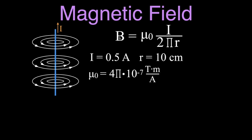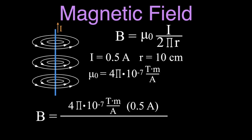Let's do a simple problem using that equation. The magnetic field strength equals μ₀ times I divided by 2πr. In this case, the current is 0.5 amperes and the radius is 10 centimeters. Our constant is 4π × 10⁻⁷. We plug the values in: μ₀ (4π × 10⁻⁷) times 0.5 amperes on top, divided by 2 times π times 0.10 meters — remember to convert 10 centimeters into meters. When you do the math, you get that the magnetic field strength 10 centimeters away from a wire carrying 0.5 amperes is 1 × 10⁻⁷ teslas.